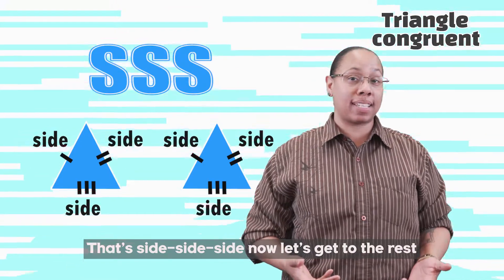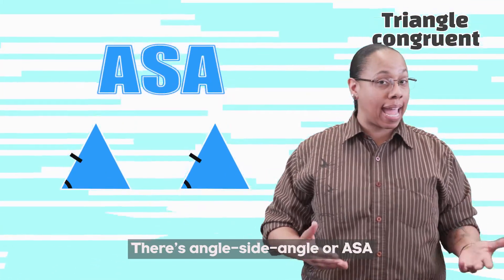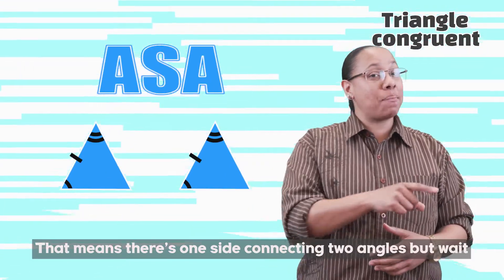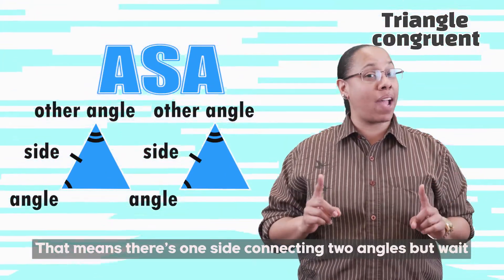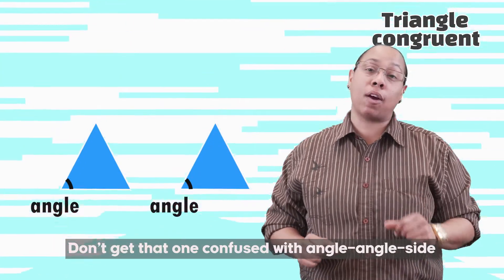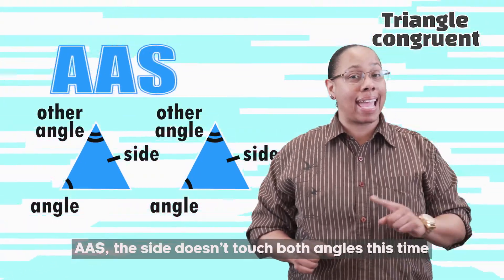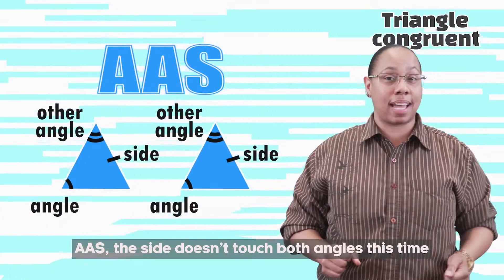Now let's get to the rest. There's angle, side, angle — or ASA — that means there's a side connecting two angles. But wait, don't get that one confused with angle, angle, side — AAS — the side doesn't touch both angles this time.